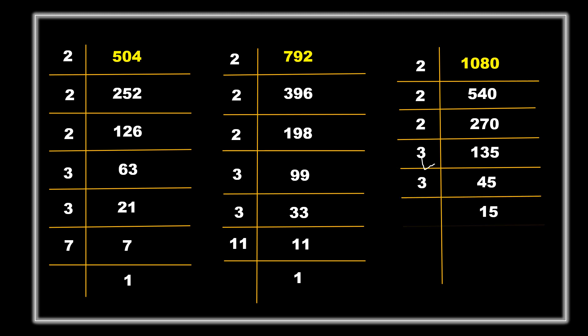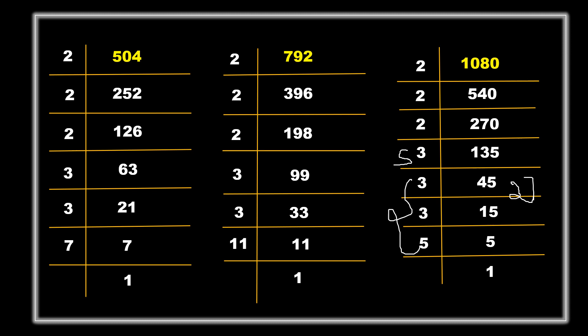Continuing: 135 ÷ 3 = 45, ÷ 3 = 15, ÷ 3 = 5, ÷ 5 = 1. If you had taken 5 first from 135, you would get 27, then 9, then 3 — the same prime factors will come out. Now we finish the prime factorization of all three numbers.